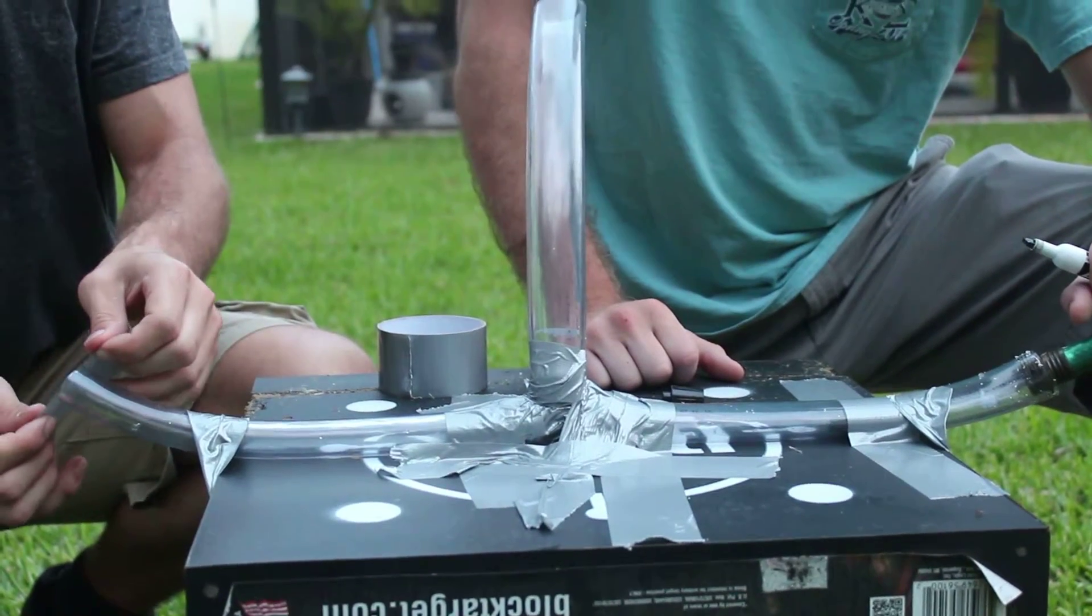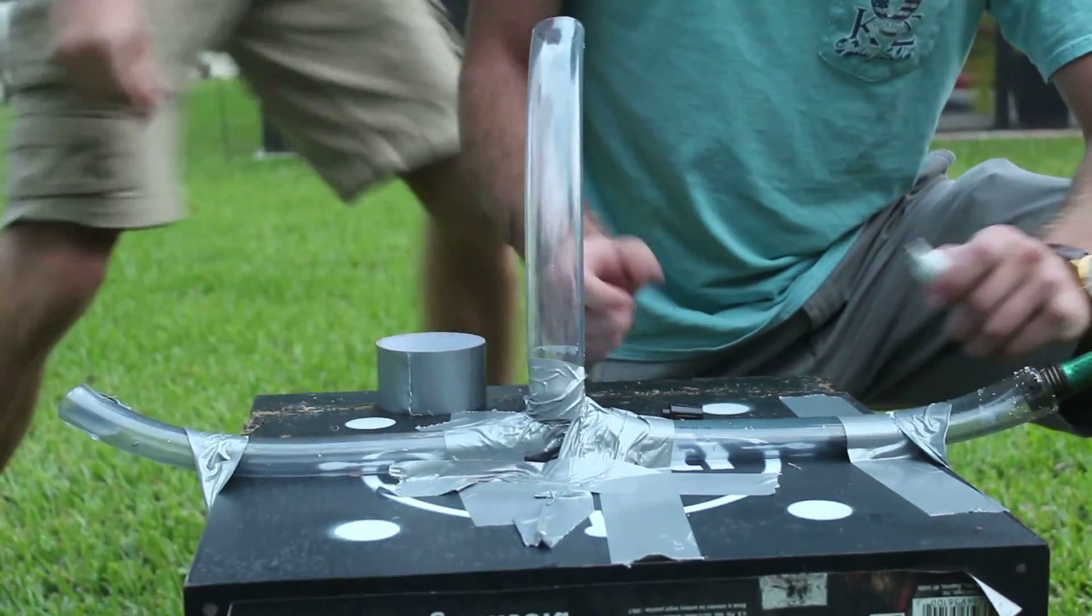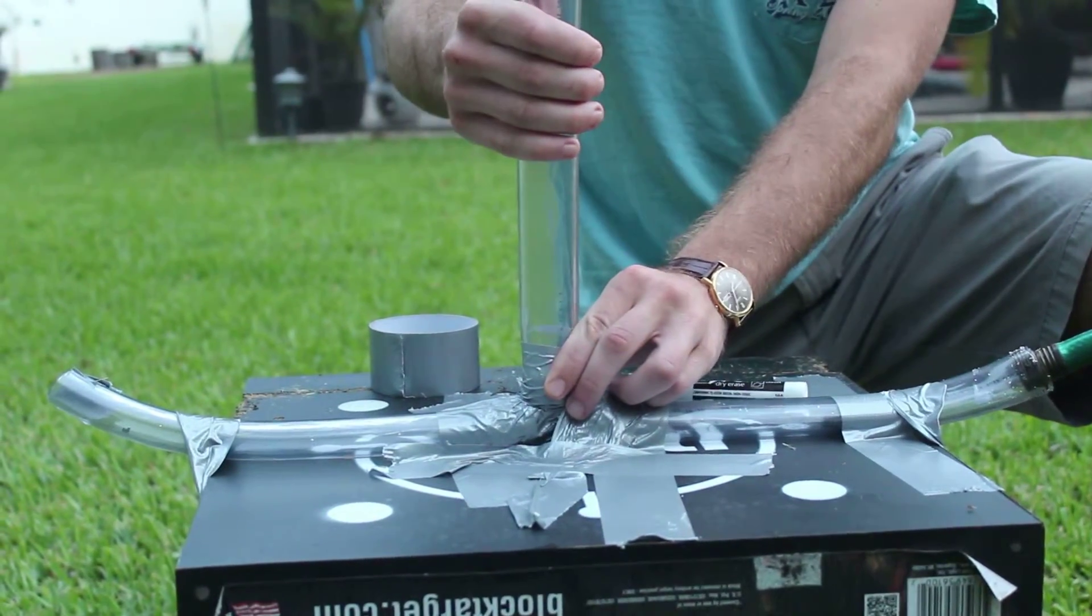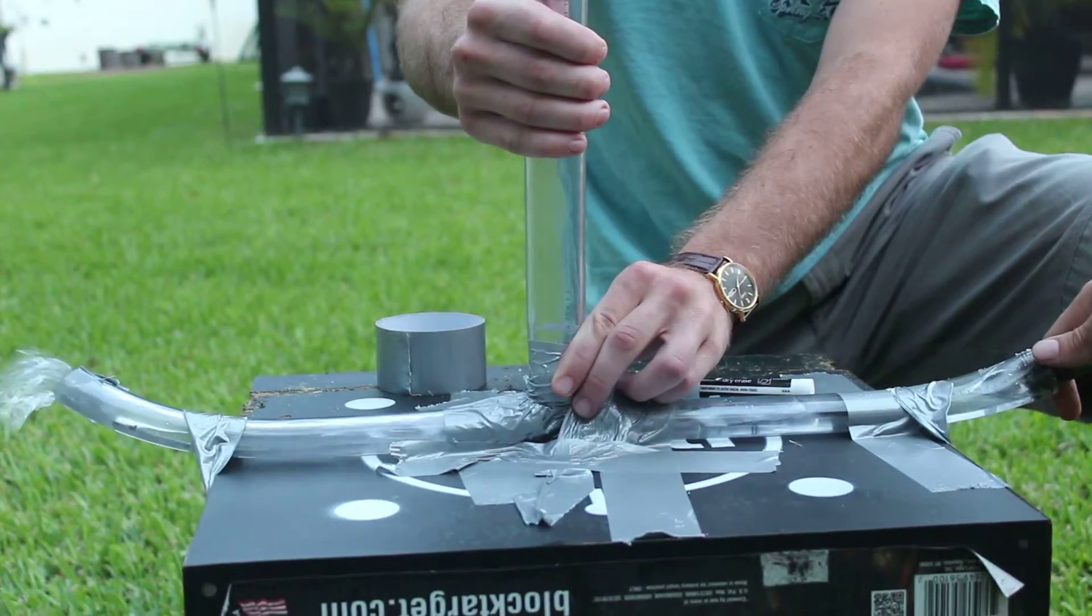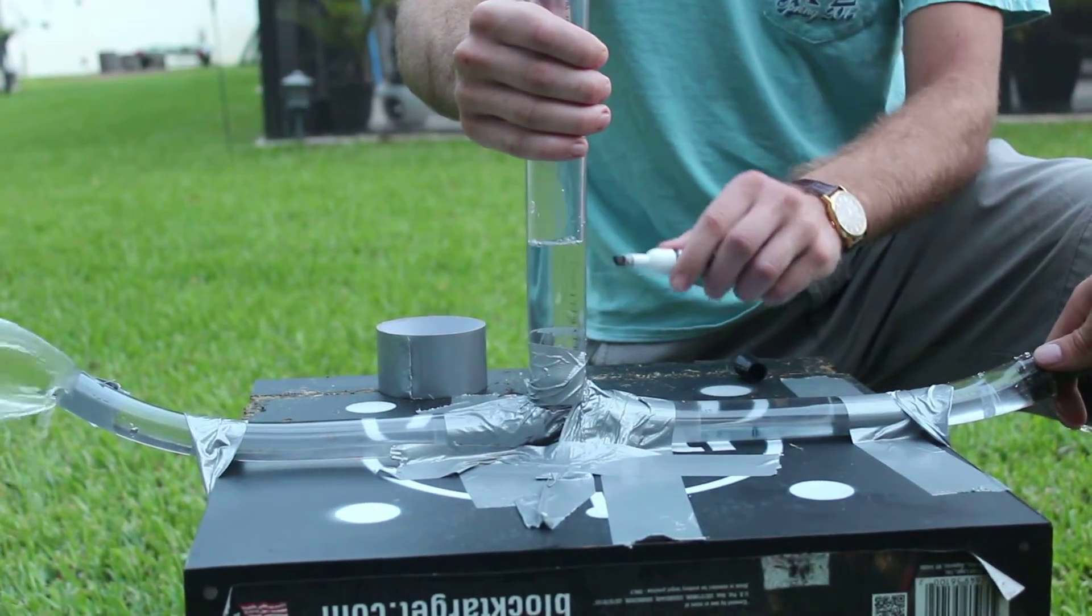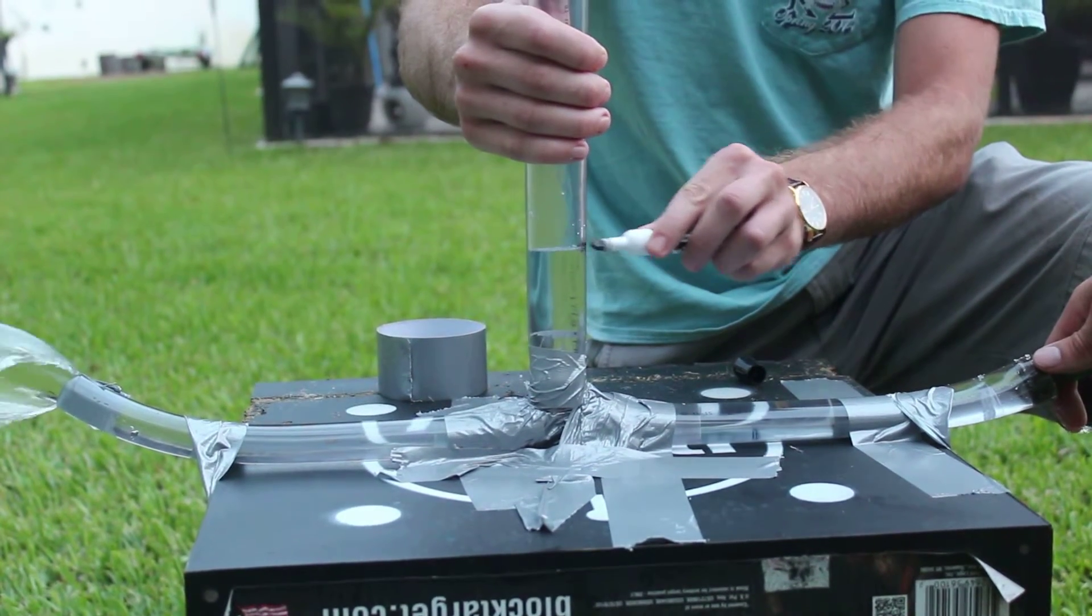For this part, we covered half the tube to increase the pressure inside the pipe. As we turn the water on, notice how the water inside the vertical pipe begins to rise. Once it reaches equilibrium, we mark it and shut off the water.